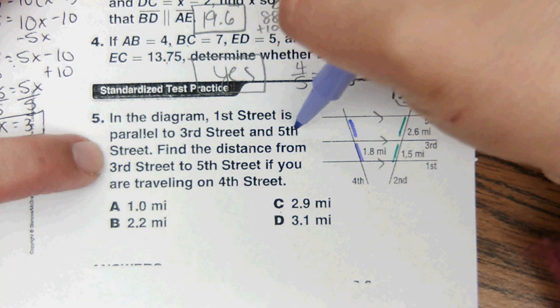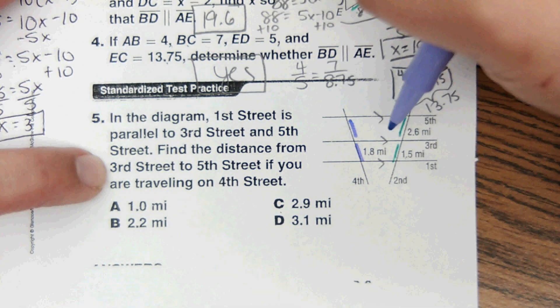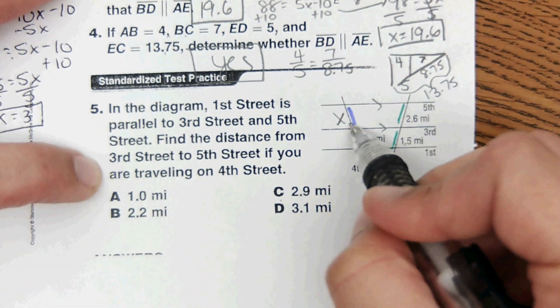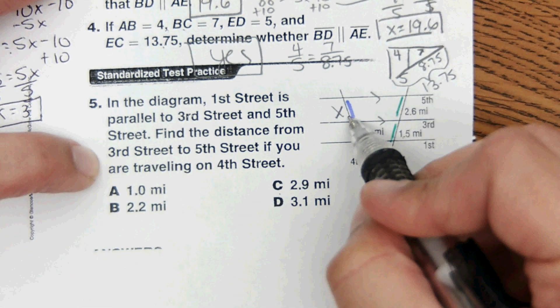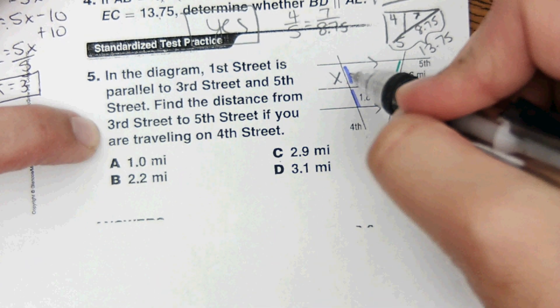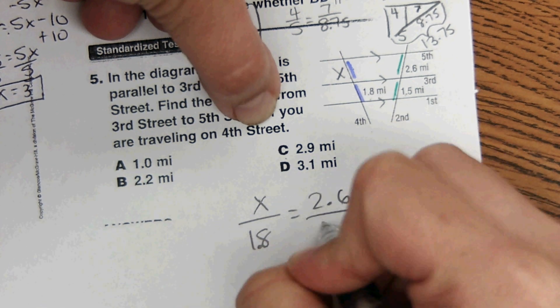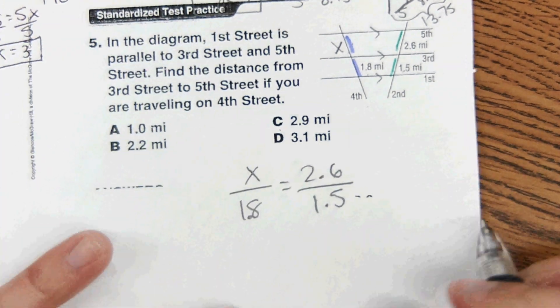Another thing that happens in this lesson is when you have three parallel lines, it breaks up these transversals proportionally. So this to this is in the same proportion as this to this. It says in the diagram, 1st Street is parallel to 3rd and 5th Street. Find the distance from 3rd Street to 5th Street. So it wants to know this x if you traveled on 4th Street. So we're going to set a proportion, this over this, x over 1.8 equals 2.6 over 1.5, and then you can find that distance.